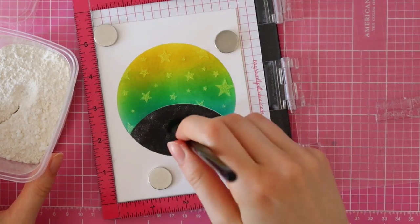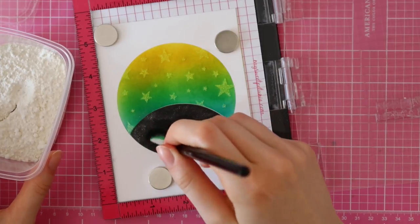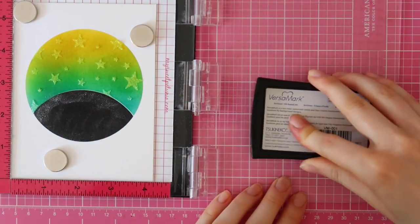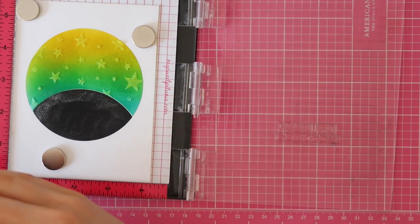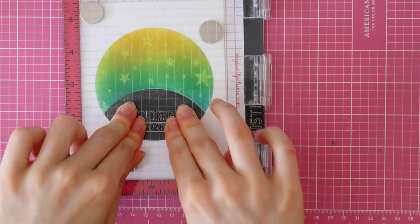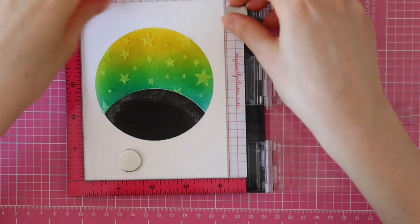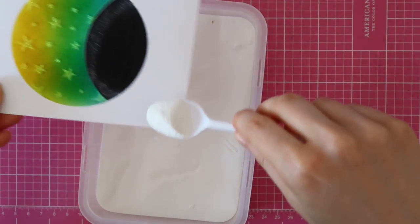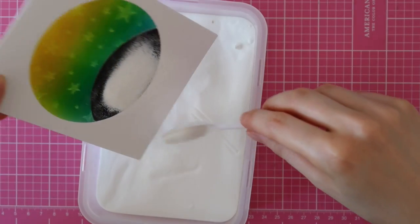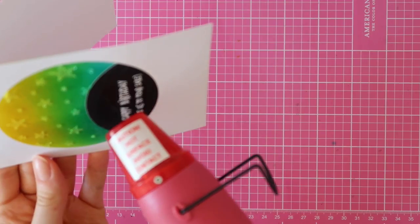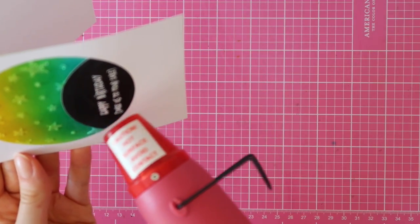Then it's time to heat emboss a sentiment. I let this black ink dry overnight, and then I am using some kitchen flour to remove any static cling. I do recommend letting your distress ink dry completely before doing any heat embossing. You can speed up the drying process with a heat tool, or you can just let it dry overnight like I did. I stamped the sentiment with Versamark, and then I'm using Opaque Bright White embossing powder to heat emboss my sentiment. This is the super fine embossing powder from WOW. Here I am melting my embossing powder, and then it's time to put everything together.